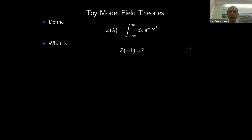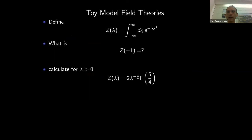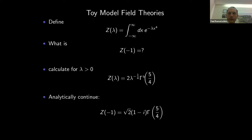Applying this to our toy field theory: for positive lambda, we do a variable change x → x times lambda^{-1/4}, and Z(lambda) becomes 2 lambda^{-1/4} times Gamma(5/4). We know how to analytically continue a power function, and doing so gives a result at lambda = minus one corresponding to taking the quarter root of minus one. This is one particular analytic continuation.